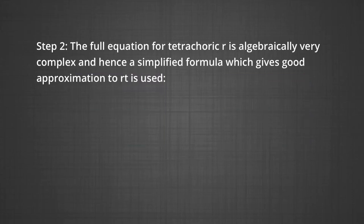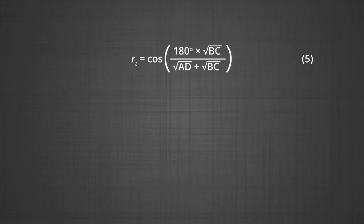The full equation for tetrachoric r is algebraically very complex. Hence, the simplified formula which gives good approximation is used: R_tet = cos(180° × √BC / (√AD + √BC)). This is an approximate formula for tetrachoric r. AD and BC are the products of the cells designated in the two-by-two table above, and cosine is a trigonometric function whose value is available from tables. In our example, BC is greater than AD, hence AD is to be put in the numerator.